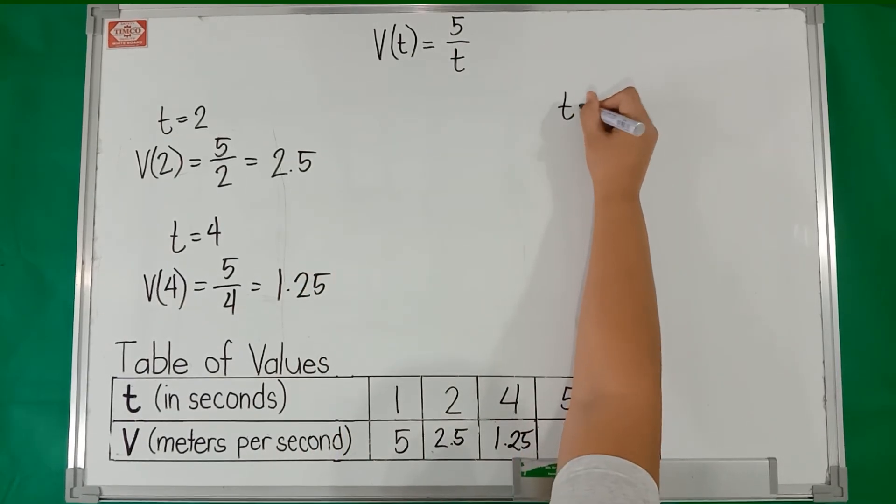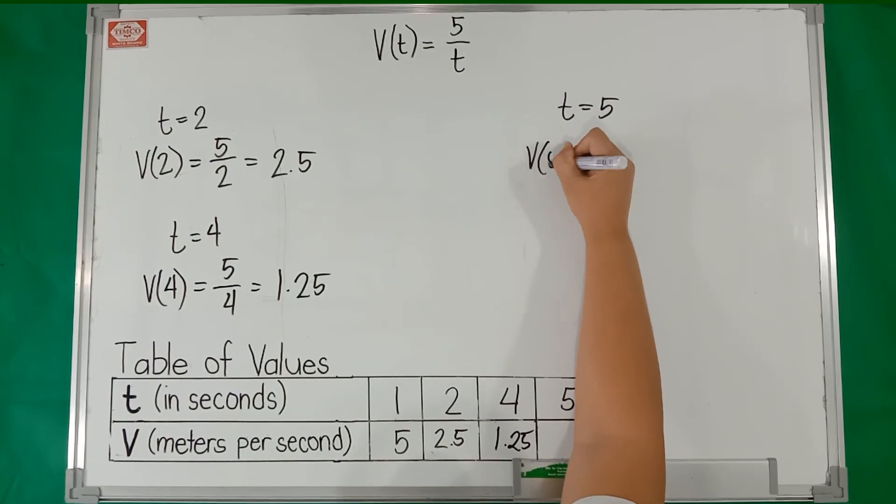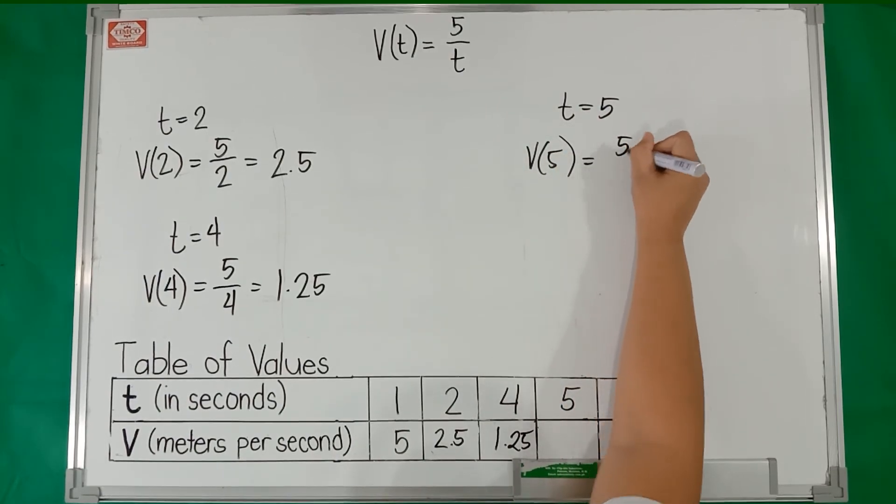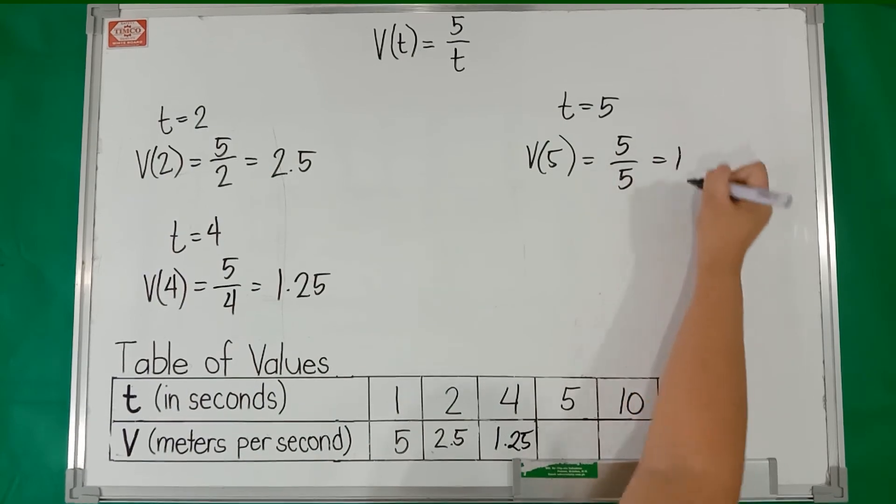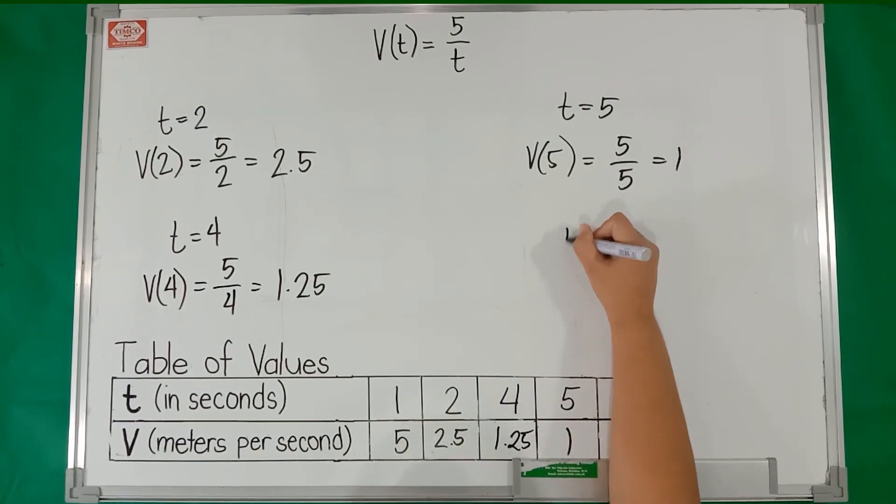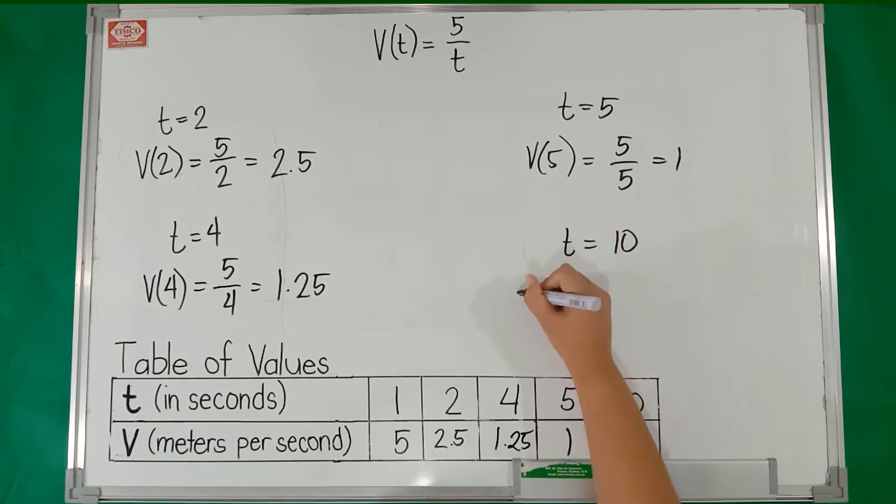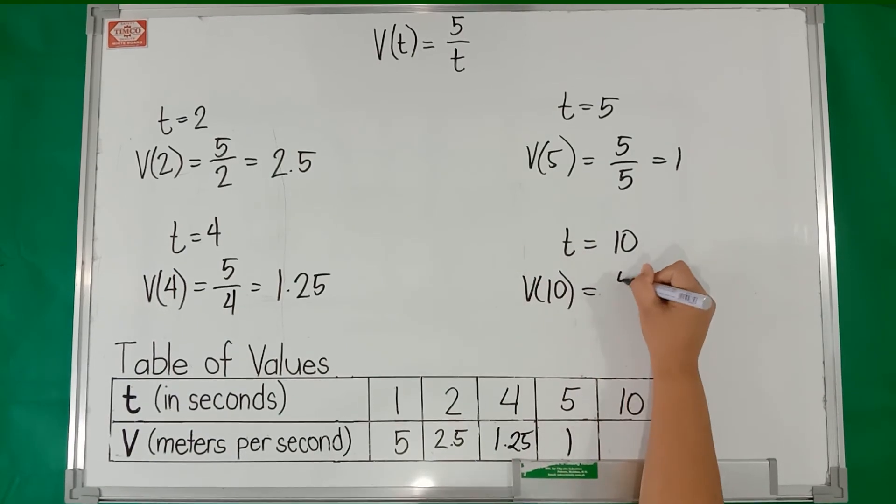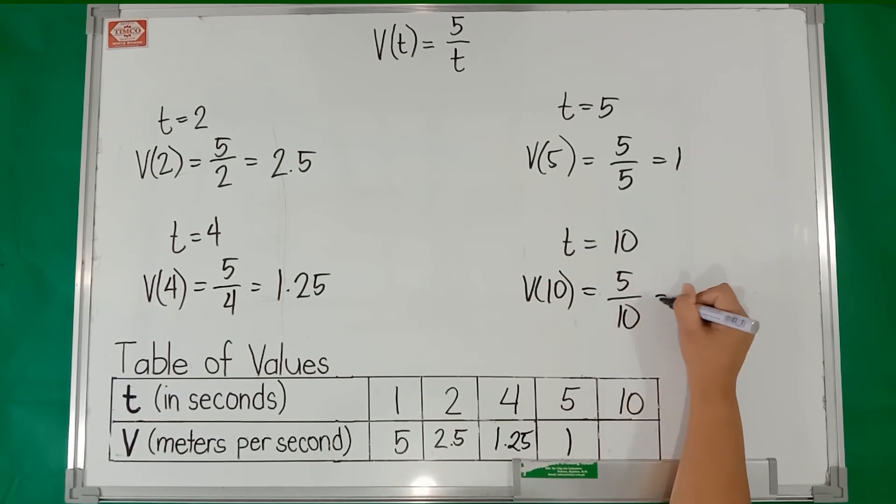If t = 5, v(5) = 5/5 = 1.25. And if t = 10, v(10) = 5/10 = 0.5.